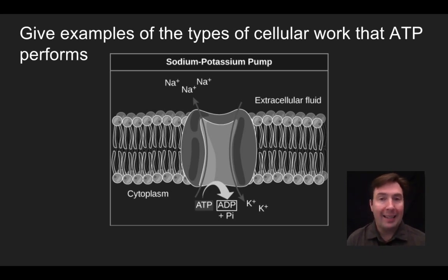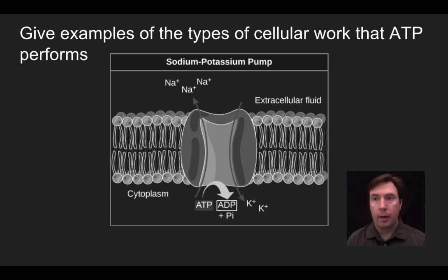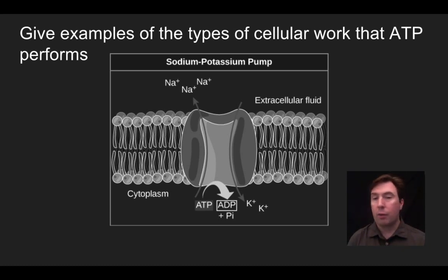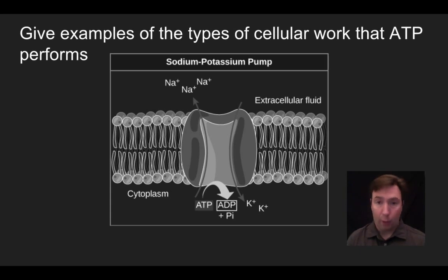This is one example of how the cell does work. Anytime a cell wants to use energy — moving a compound from one part of the cell to another, moving things along a protein, or altering a cell's shape — all of these require a little bit of energy. Each time, a little bit of ATP is spent and broken down into ADP in order to move those molecules around.